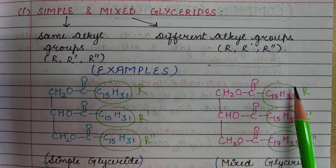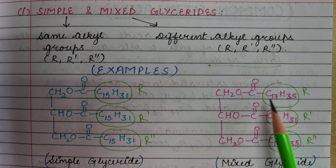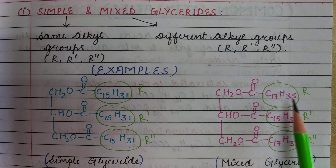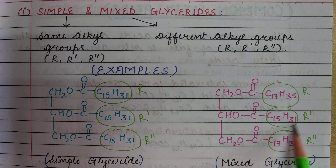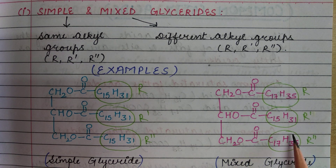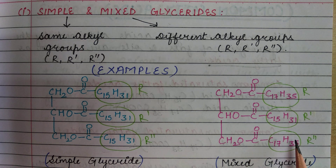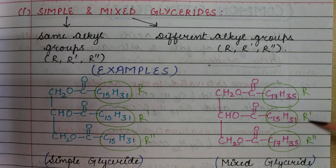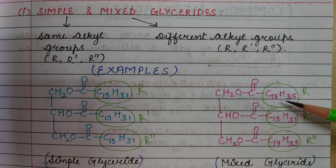In a mixed glyceride, the R groups differ. For example, the R group may be C15H35, R' is C15H31, and R'' is C17H35. So when two or three of the alkyl groups are different, they are called mixed glycerides.